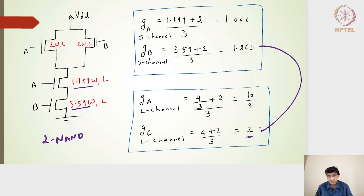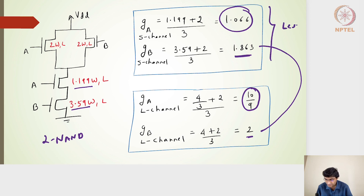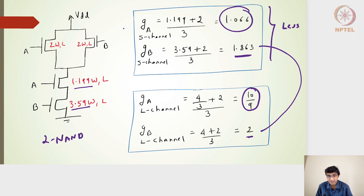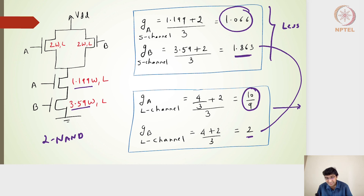The short channel current model gives lower logical effort values. Comparing 10/9 with 1.066, the short channel value is slightly less. The short channel model is more accurate — it gives logical efforts and parasitics closer to the true values, so delay evaluation will also be more accurate. The long channel model is always a conservative approach, giving slightly higher logical effort values and therefore slightly conservative delay calculations.